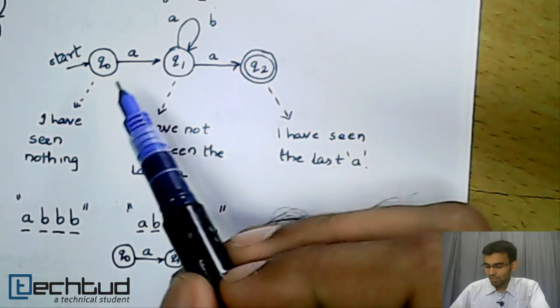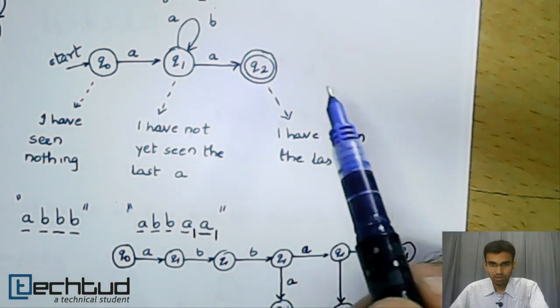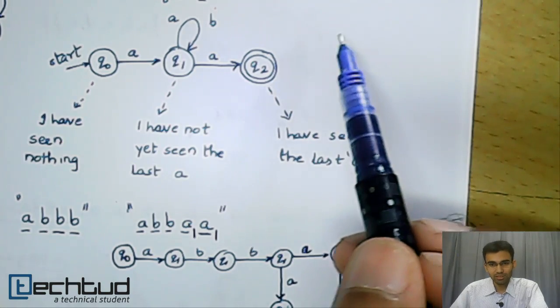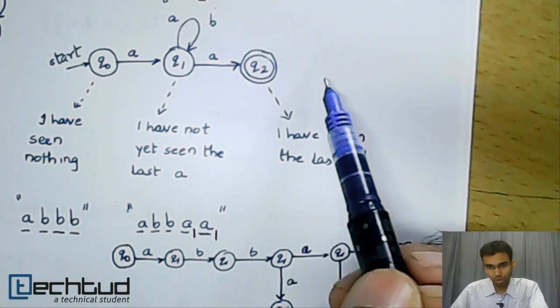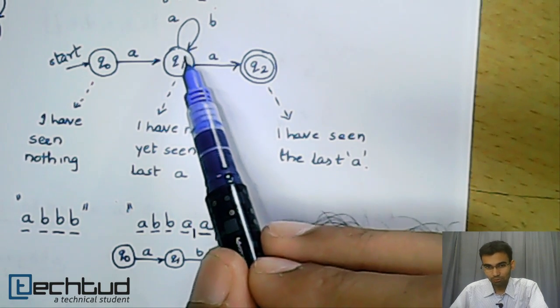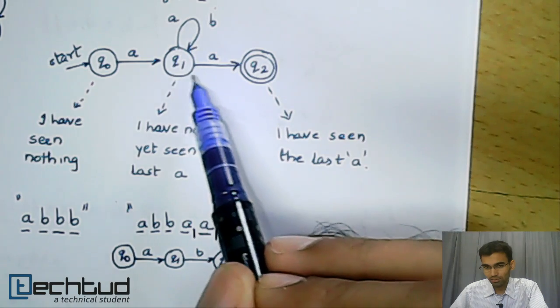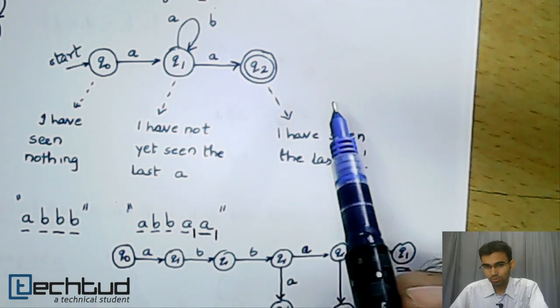Please notice that on Q0, we do not have a transition on a B, and in Q2, we do not have a transition neither on an A nor a B. In Q1, we have a transition on a B and we have two transitions on an A, one looping back to Q1 and one moving forward to Q2.